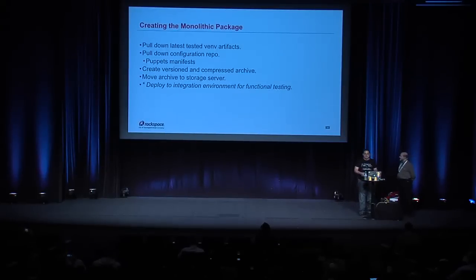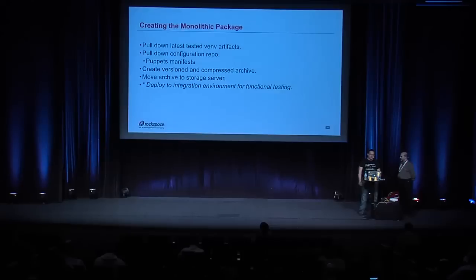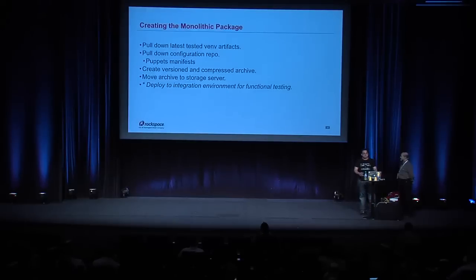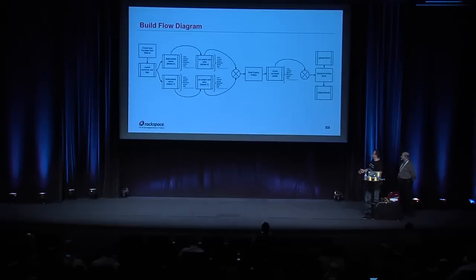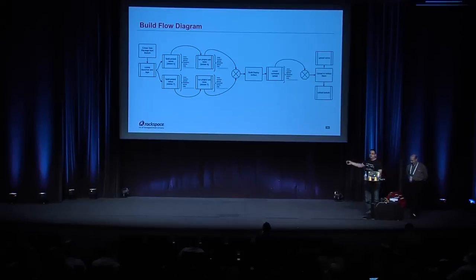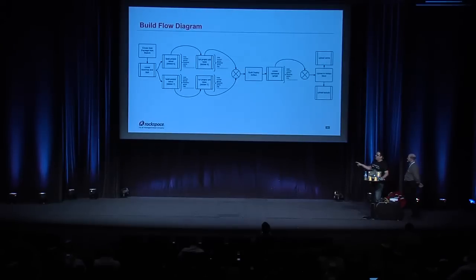Creating this monolithic package is a pretty interesting and fully automated process. It grabs from local storage all of the virtual environment artifacts, pulls down a configuration repository, and creates a versioned and compressed archive that we move to the storage server. It's basically a large tarball of nothing but virtual environments. The base build flow starts by branching the repository and doing tags, then building the virtual environments with full unit tests, building the deploy artifact, and storing it into the storage server.